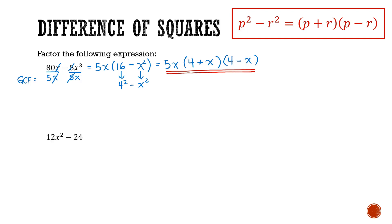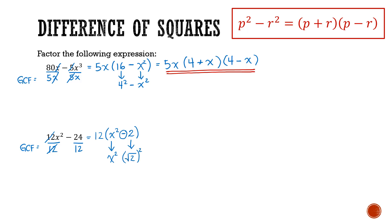Let's try 12x squared minus 24. First, look for the greatest common factor — both terms are divisible by 12. Factoring out 12: 12x squared divided by 12 leaves x squared, and 24 divided by 12 leaves 2. So we have 12 times the quantity x squared minus 2. Now, while it may not be obvious that 2 is a perfect square, it is really the square of the square root of 2, so the difference of squares will apply.